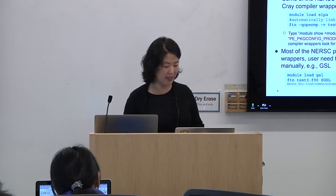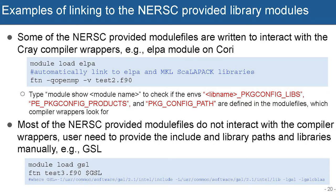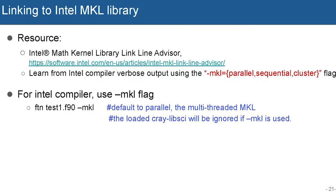Many NERSC-provided module files don't follow the Cray convention, so you need to explicitly provide those header paths and libraries. Fortunately, for your convenience, we usually provide environment variables — for example, GSL. You load the module, and then the environment variable is defined which expands to include paths, library paths, and library names. For MKL, we recommend going to the link-line advisor that Intel provides, or if you use the Intel compiler, you can just use the -mkl compile link line option, which automatically links to the MKL library.